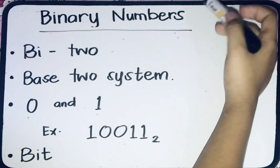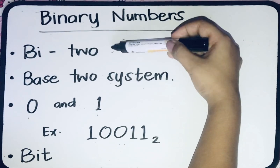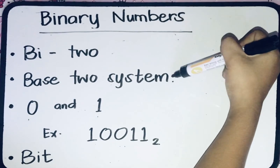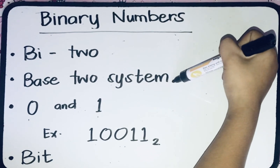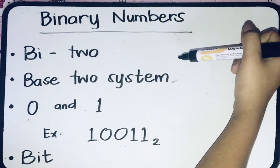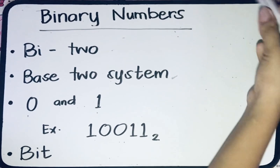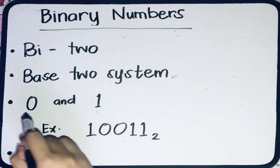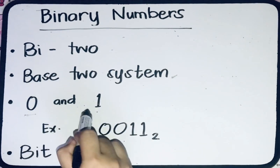Binary came from the word 'bi', meaning two, and in binary numbers we are in the base 2 system. So we need to say there are only two numbers used, which are 0 and 1.